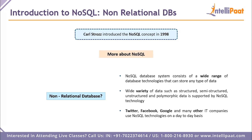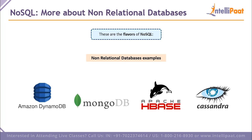The wide variety of data that NoSQL handles includes structured data, semi-structured data, unstructured data, and polymorphic data — think images, videos, or unstructured data in the form of a spreadsheet. Companies like Twitter, Facebook, and Google use NoSQL for their day-to-day activities. Some examples of NoSQL databases include Amazon DynamoDB, MongoDB, Apache HBase, and Cassandra.